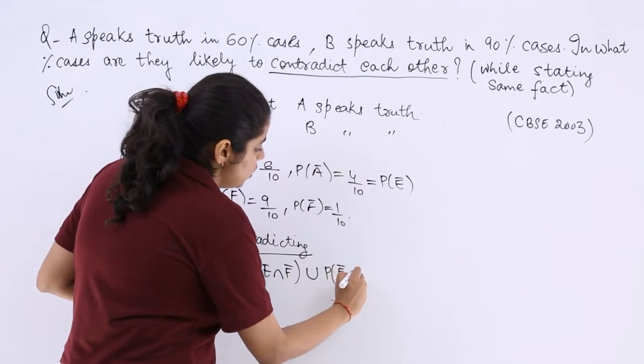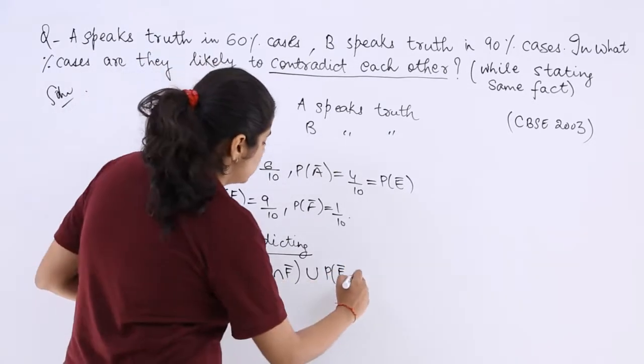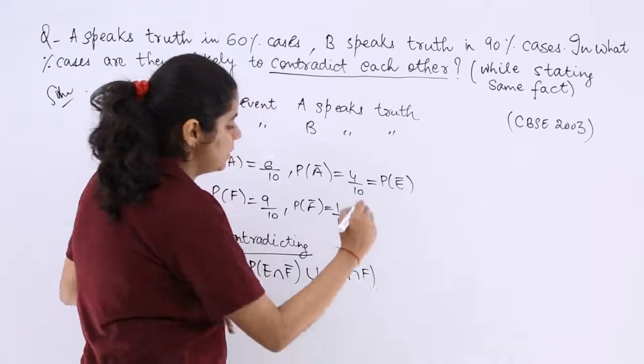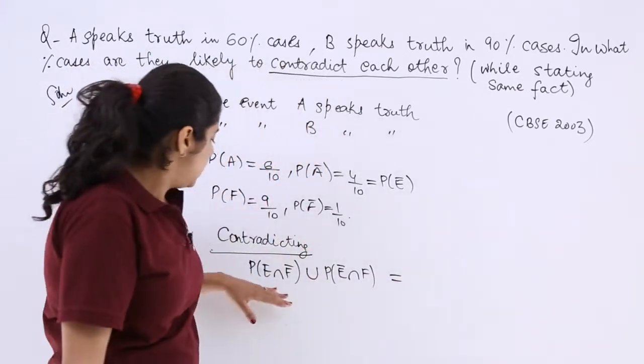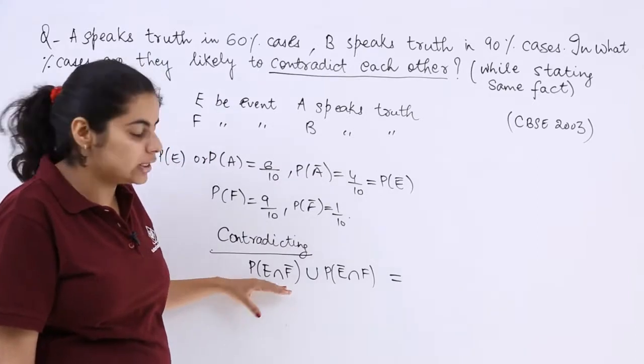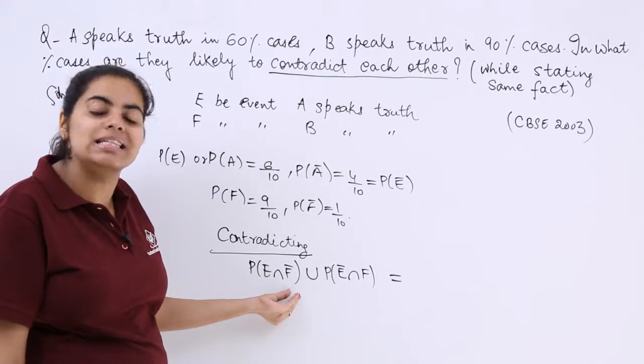Or E does not happen. That means A does not speak the truth and B speaks the truth. Now just put the values to get the answer. Here these are independent of each other, so you can just separate the probabilities and then multiply.